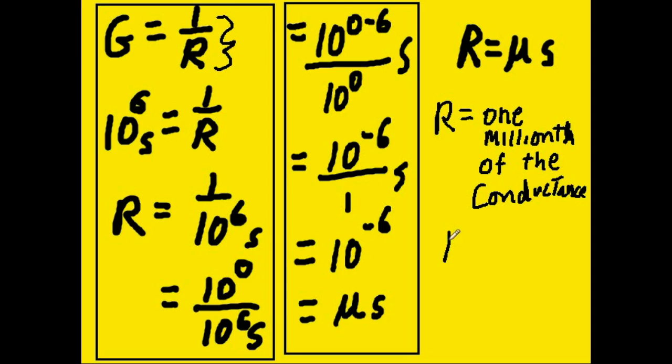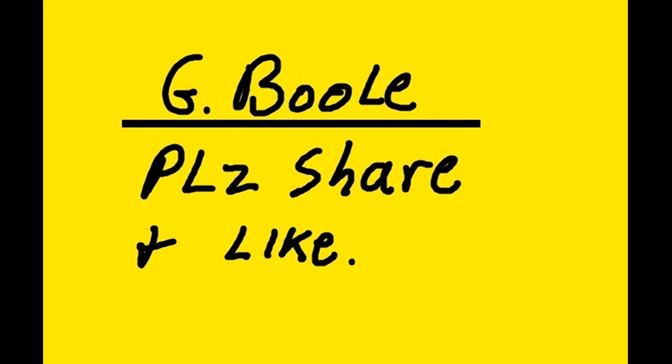And consequently, R equals one over G. And if G is a million, then R is equal to one millionth of whatever that G is.